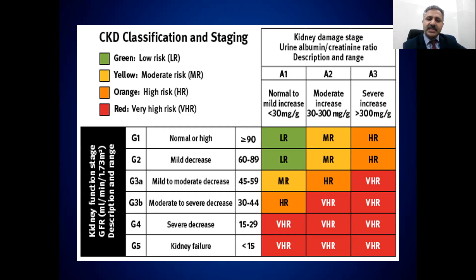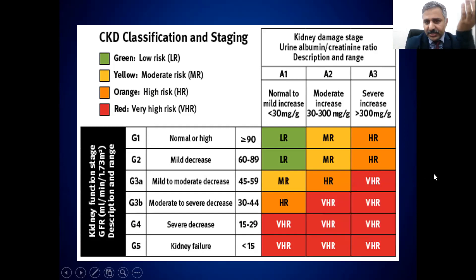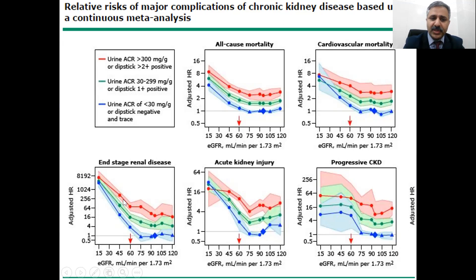Based on GFR and albuminuria together, you can define from the outset whether someone is at low, moderate, high, or very high risk. People with a good GFR — even with significant albuminuria — are at maximum high risk, not very high risk. Higher albuminuria is associated with greater all-cause mortality, cardiovascular mortality, progression of kidney disease, risk of acute kidney injury, and risk of end-stage renal disease. Macroalbuminuria carries the highest risk for all these complications.